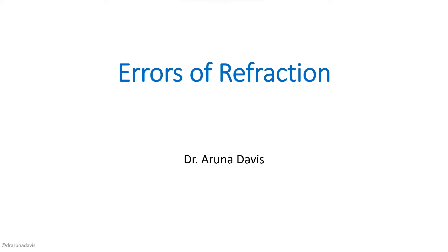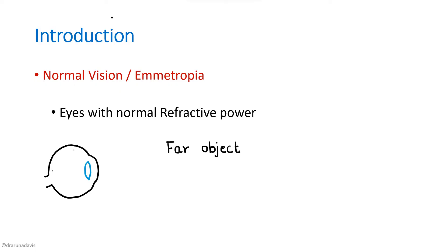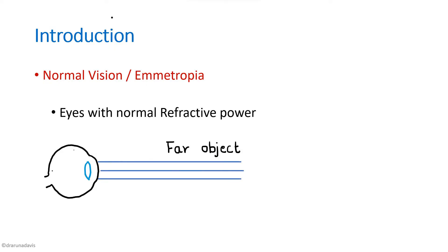In this video, we will be discussing errors of refraction. In the introduction, you have to write about what normal vision, or emetropia, is. Eyes with normal refractive power are called emetropic eyes. A normal eye will be able to see a far object — that means it will be able to converge parallel rays coming from a far object onto its retina.